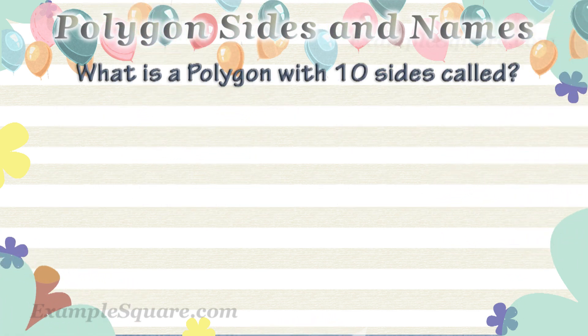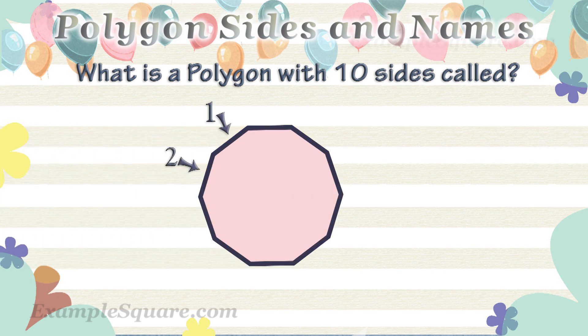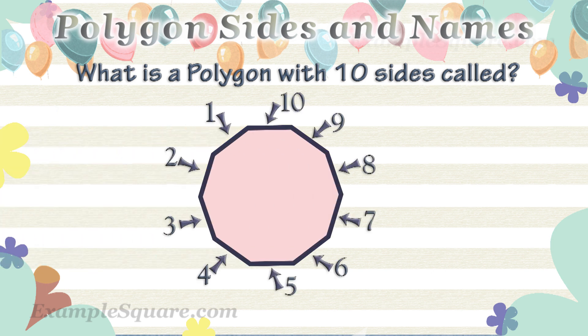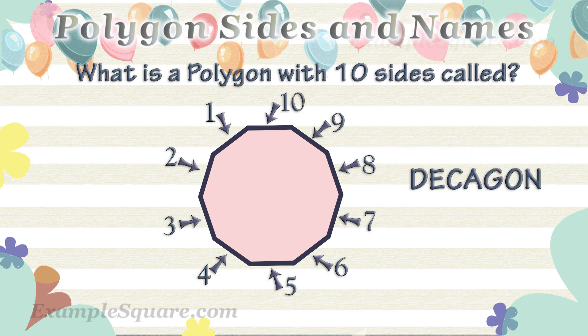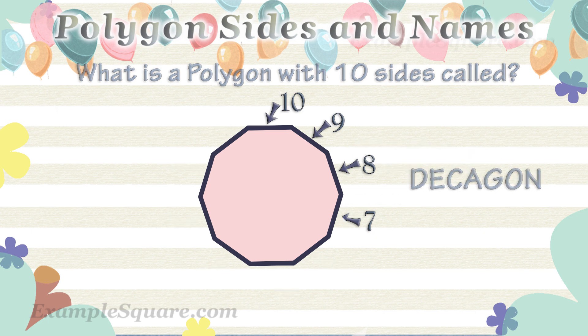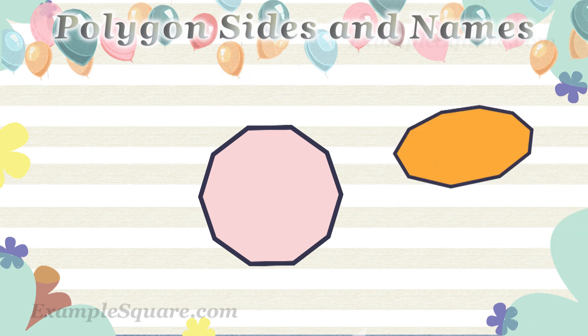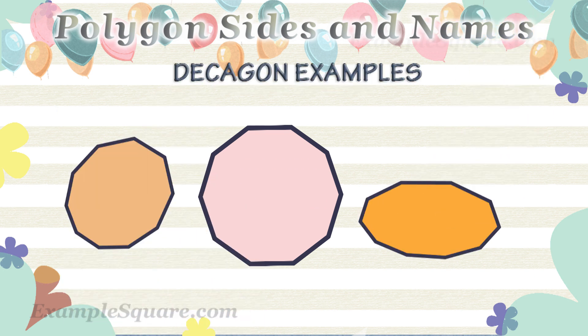What is a polygon with 10 sides called? A polygon with 10 sides is called a decagon. These are some examples of decagons.